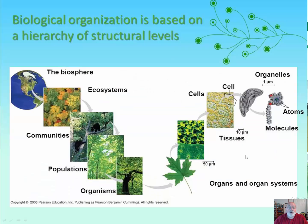Ecological organization: we start with the biosphere, then different ecosystems depending on latitude, moisture, and warmth, which differentiates the soil and thus the plants and animals. We have communities and ecosystems with different species, populations of the same species, then individual organisms, then tissues, cells, molecules, and atoms — this is all of life.